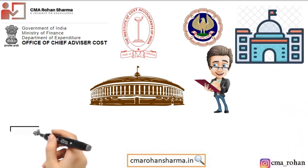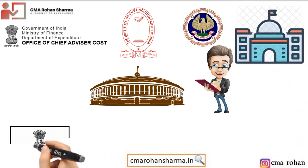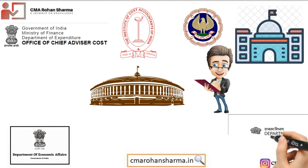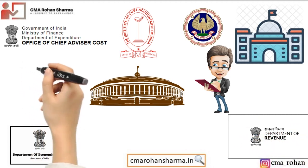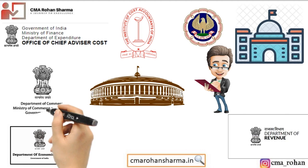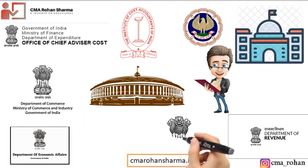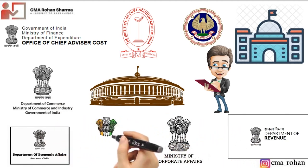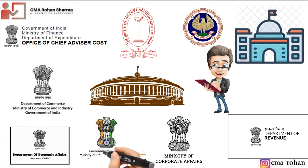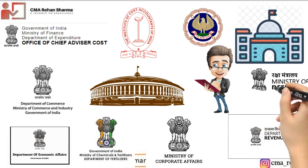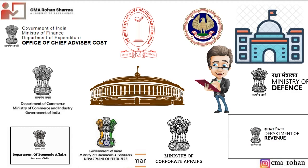There are 31 participating officers of various ministries and departments such as Economic Affairs, Revenue, Commerce, Company Affairs, Defense, Chemicals and Fertilizers, Industry, Agriculture, Consumer Affairs and PD, Supply, National Pharmaceutical Pricing Authority, INB, etc.